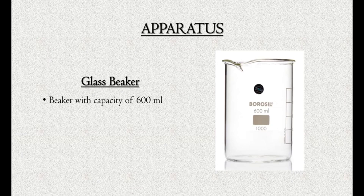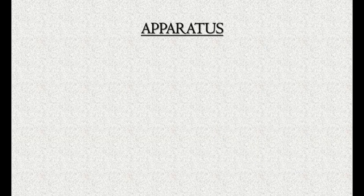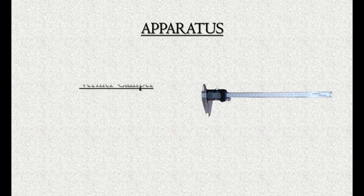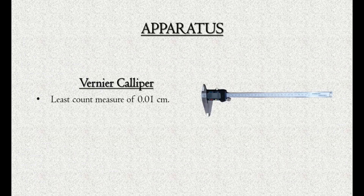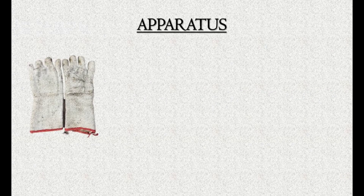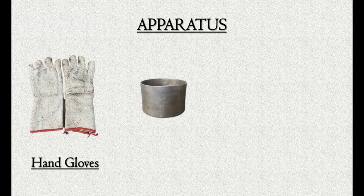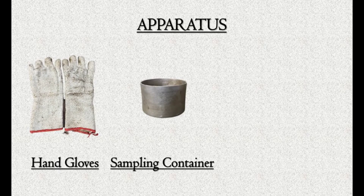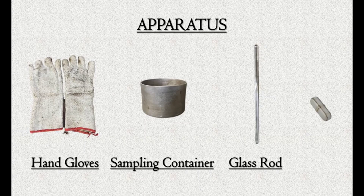Glass beaker with capacity of 600 ml. Vernier caliper with least count measurement of 0.01 cm. Additional items include hand gloves, sampling container, glass rod, and stirrer.